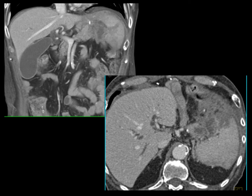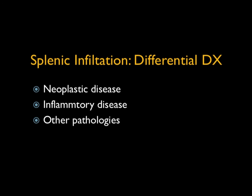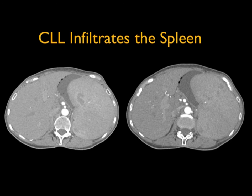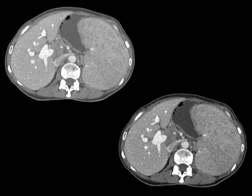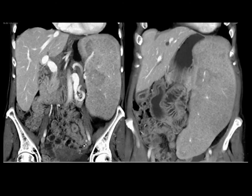We can see the infiltration around the splenic hilum and the infiltration into the spleen proper by direct tumor extension. When we talk about infiltration, we could talk about neoplastic disease like CLL or lymphoma, inflammatory diseases, and other pathologies. Great example of CLL: a very large spleen pushing on the stomach, with a salt and pepper appearance to the spleen. You can see it on the venous rather than arterial phase. That salt and pepper appearance is particularly impressive on these images — a very large spleen, beautiful diagnosis of CLL.